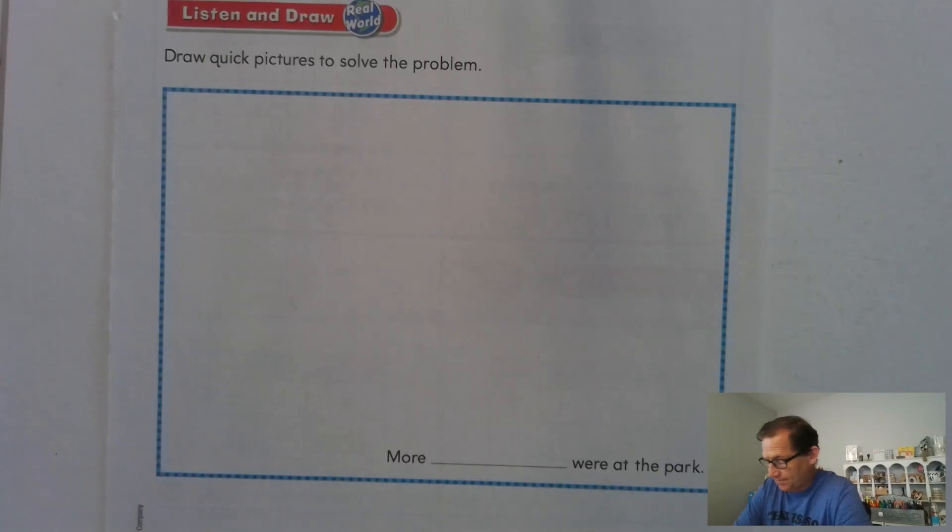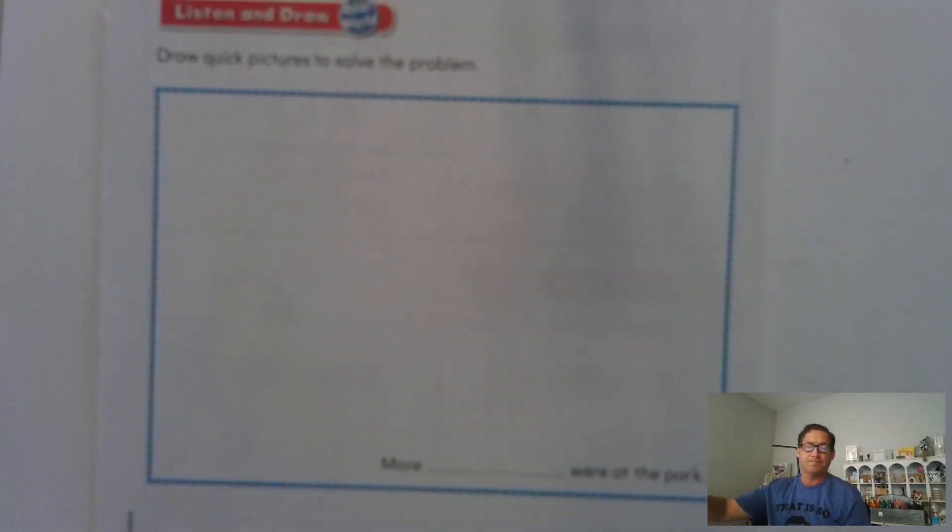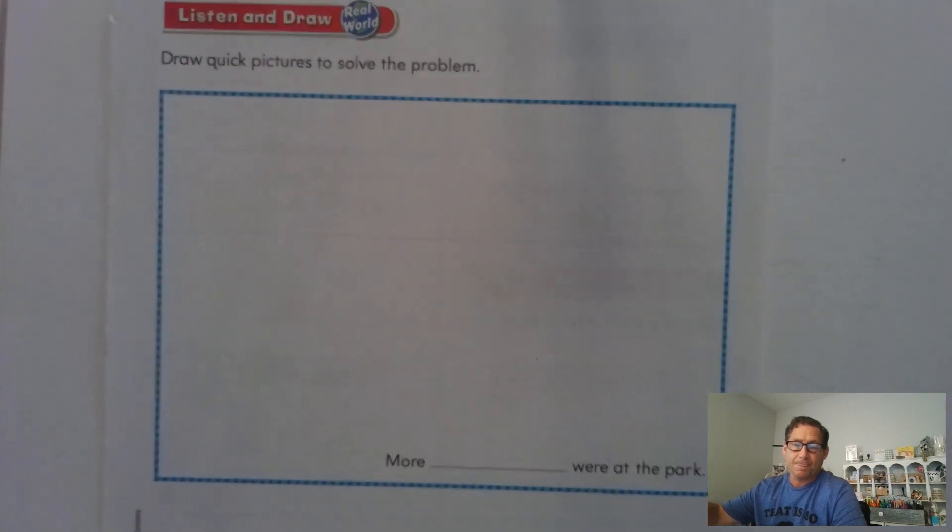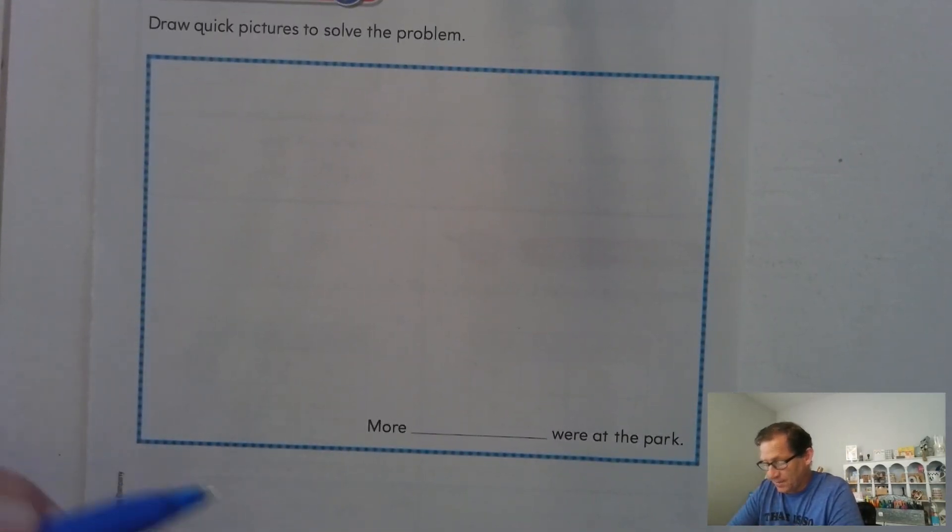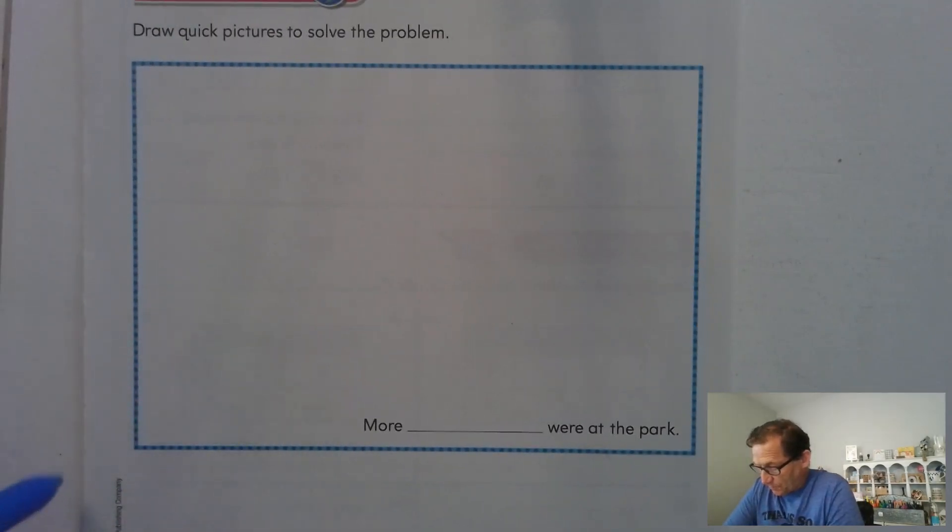So listen to the following question, draw a quick picture to solve the problem. After I read the question, if you want to, you should pause the video so that you can see if you can do this without my assistance. There were 125 butterflies and 132 birds at the park. Were there more butterflies or more birds at the park? Go ahead and pause, draw your quick picture and see what you come up with.